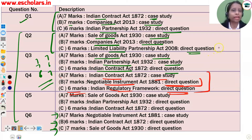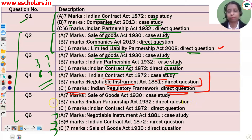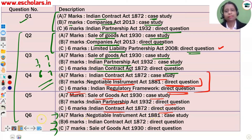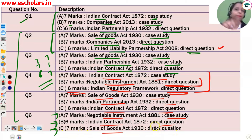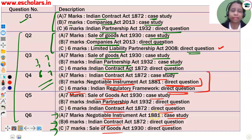Now here is an important strategic point: if you leave both LLP and Indian Regulatory Framework, then two questions become weak for you. So analyze this and utilize it in your preparation. Question number 5 also has Parts A, B, C with 7, 7, 6 marks. Part B is direct, and Part C from Indian Contract Act is also direct. Question number 6, Part B comes from the Indian Contract Act — direct question, and Part C is also direct.